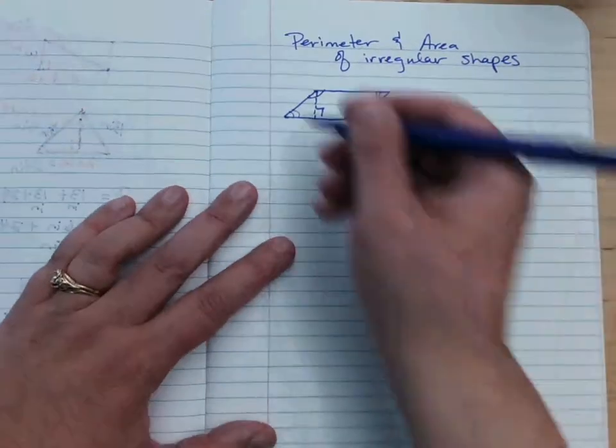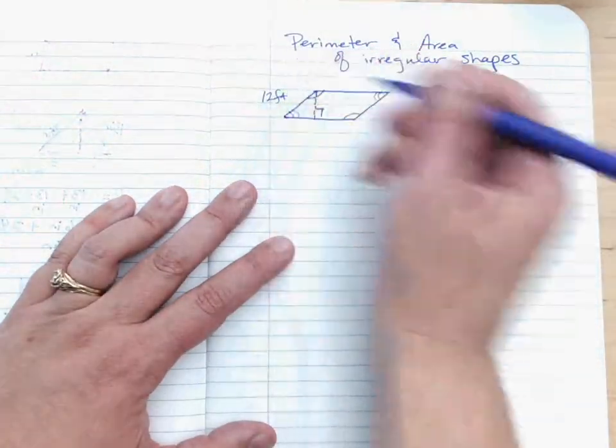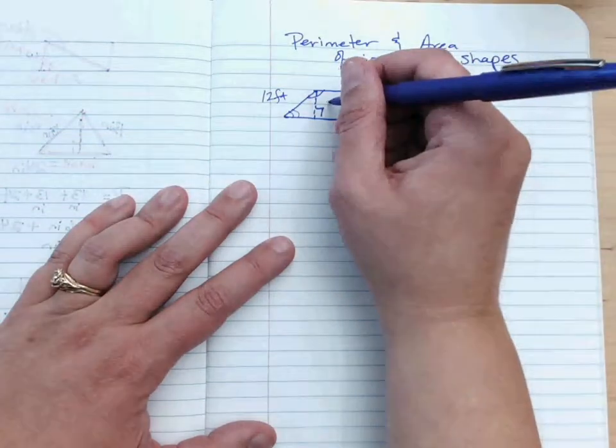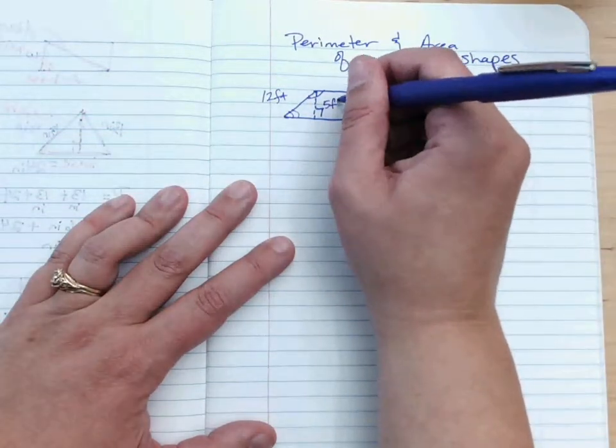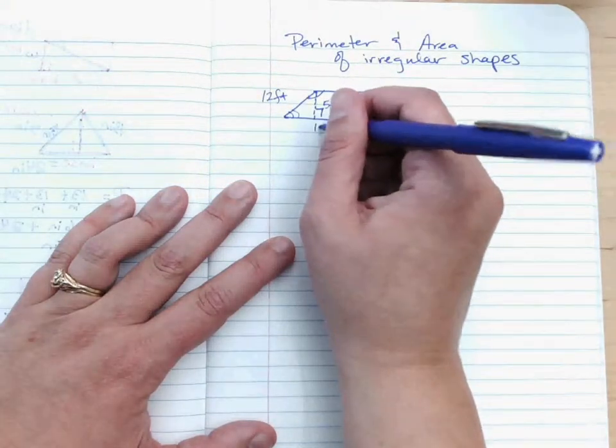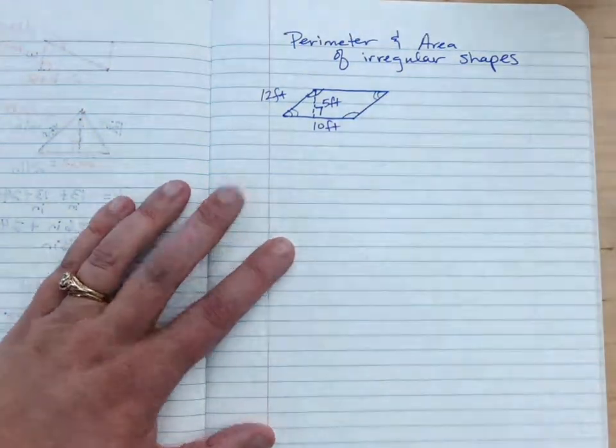So if we know that this is 12 feet, and this is, I'm just going to call this for this sake, 5 feet, even though it's a little different than your example, and I'm going to call this one 10 feet.